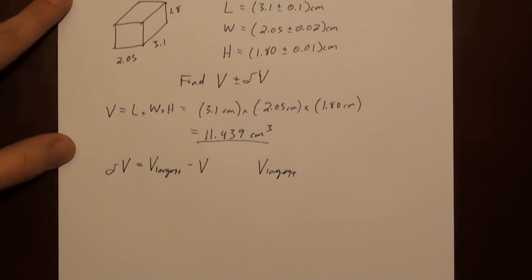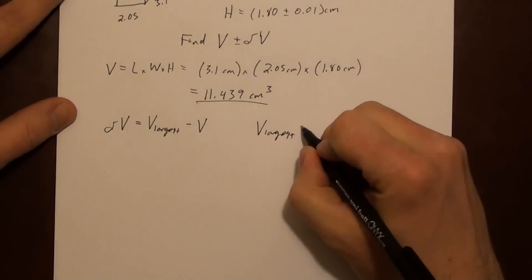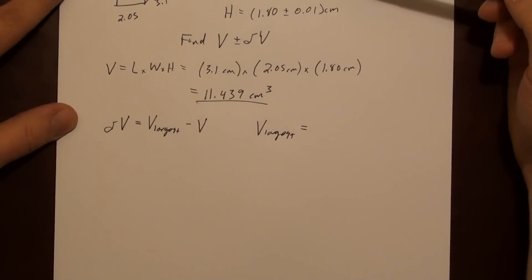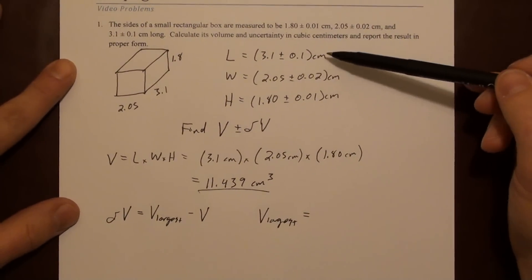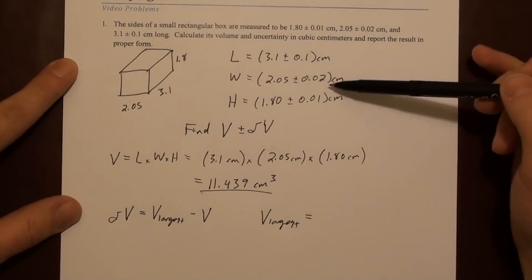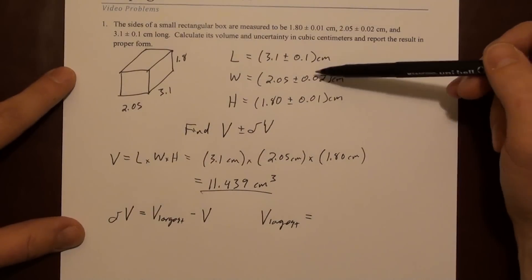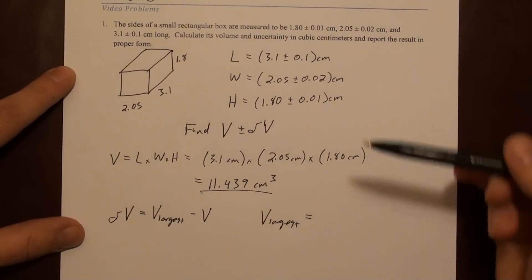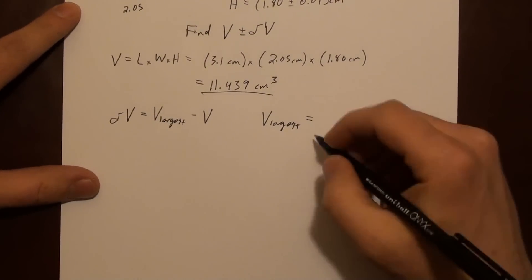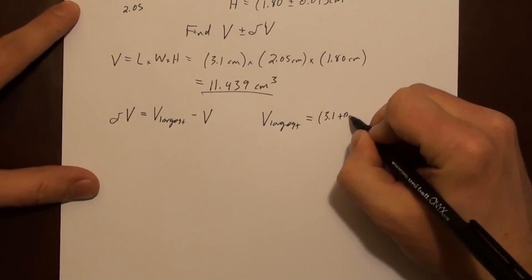Let's find V_largest. The procedure here is simply to determine from the length and the width and the height, the errors in these, how they could conspire to give us the largest wrong answer. In this case, you're just going to add the error to each of these values. Remember, that's not always the case, but it happens to be the case this time.